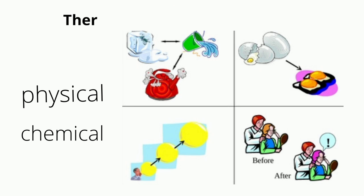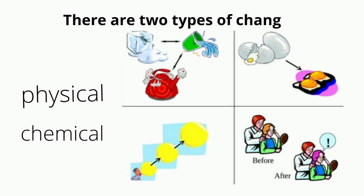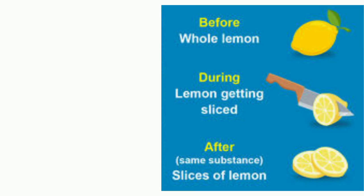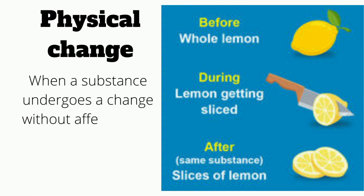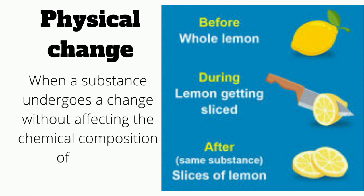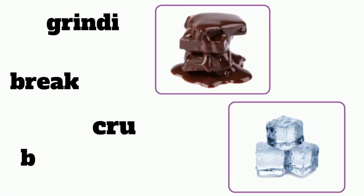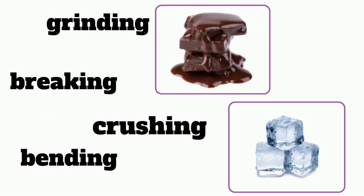There are two types of changes: physical and chemical change. When a substance undergoes a change without affecting the chemical composition of matter, then it is considered a physical change. Grinding, breaking, crushing, bending, and changes in the state of matter are examples of physical changes, also called reversible changes.